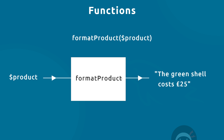We can also create our own functions. For example, if we want a function that formats a particular product, we could create a `formatProduct` function. That function would expect a product variable as an argument, run its code, and spit out a string like 'the green shell costs x amount of money.' We can call this function as many times as we want and get the same formatted output every time. We create a block of code, give it a name, and call it at any point in time.